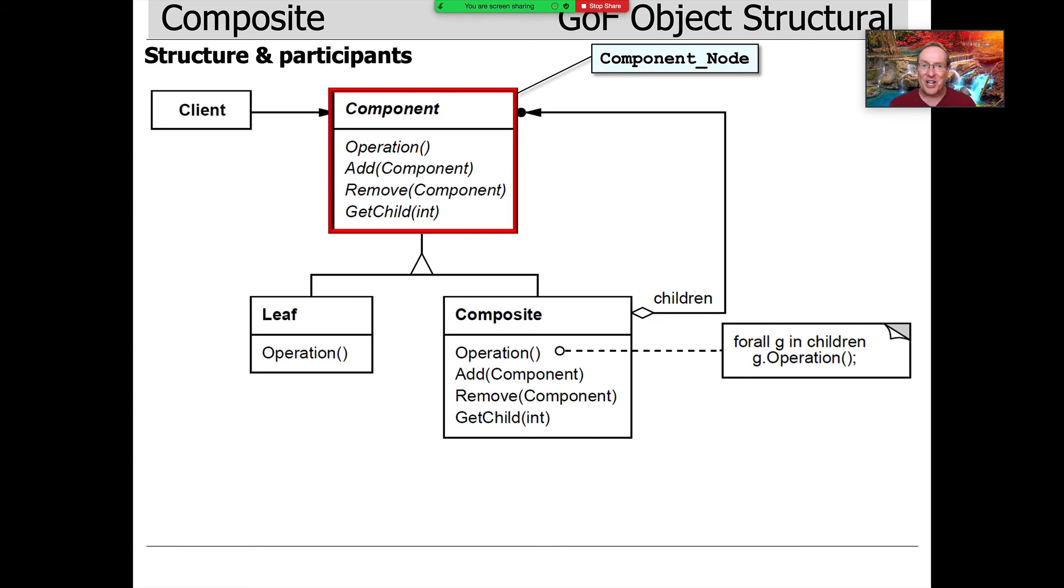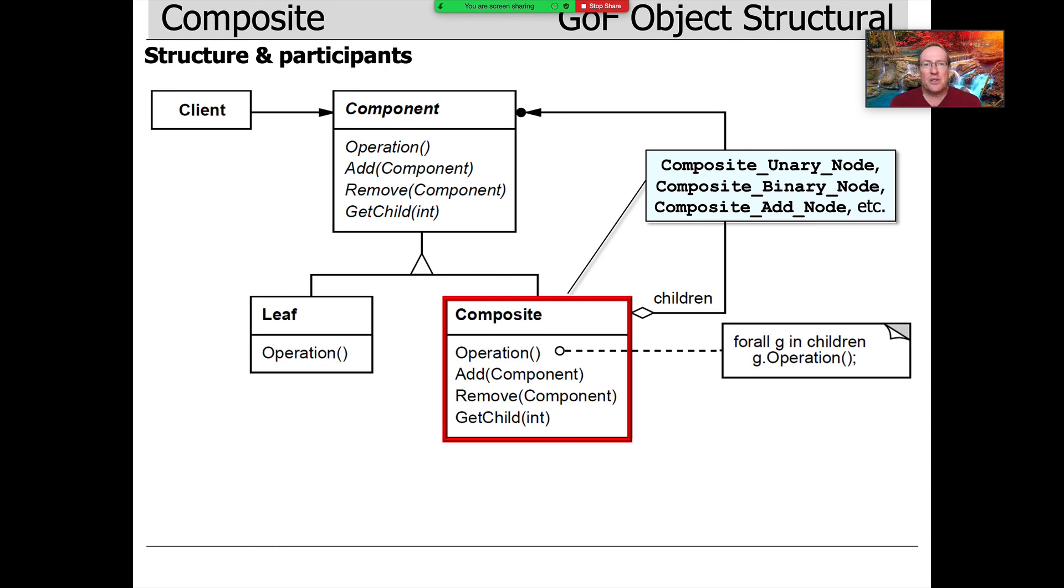But of course, in our instantiation, the names will be different for the methods because they correspond to the domain of our expression tree, not just some abstract domain. And then there's different composite subclasses—these will be composite unary node, composite binary node, composite add node, composite subtract node, and so on and so forth.